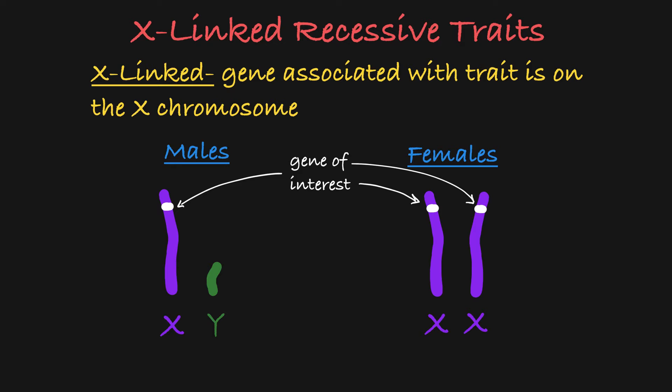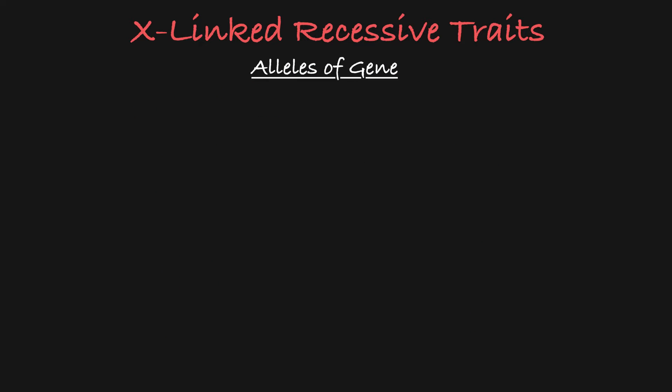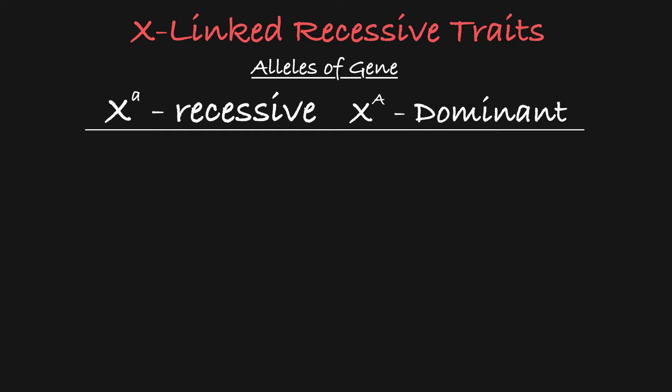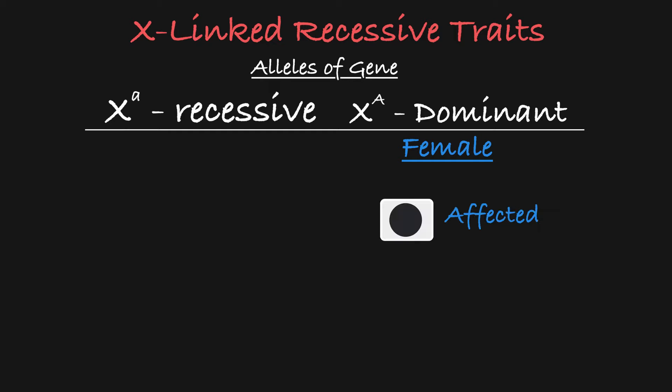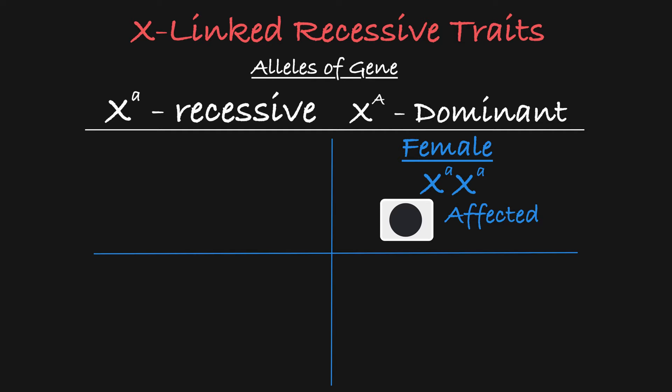So let's say this X-linked gene has a recessive allele and a dominant allele. For a female to be affected by this trait, she must be homozygous for the recessive allele. Any female who is homozygous dominant or heterozygous will be unaffected.